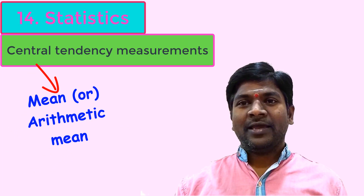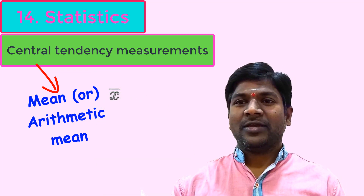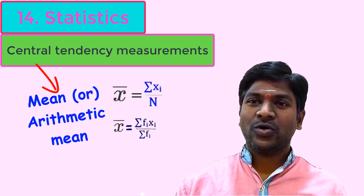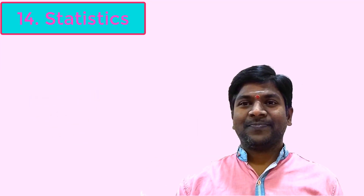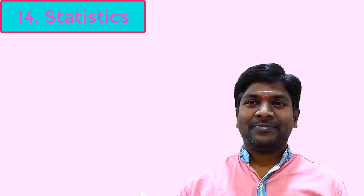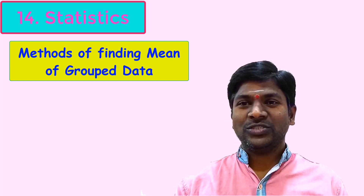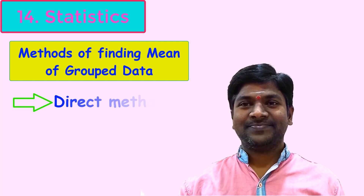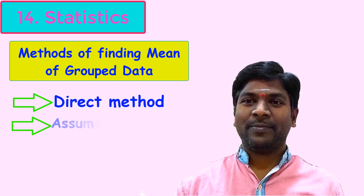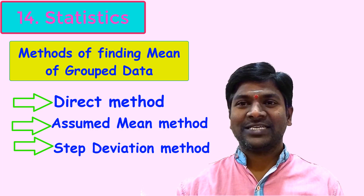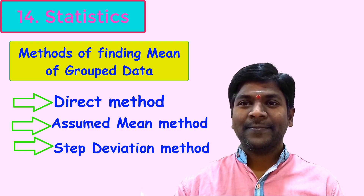The mean of raw data was calculated, and the mean of classified data was also calculated in our last class. We have three methods to find the mean of classified data: the first is the direct method, the second is the assumed mean method, and the third is the step deviation method. In the last class we solved classified data's mean using the direct method.